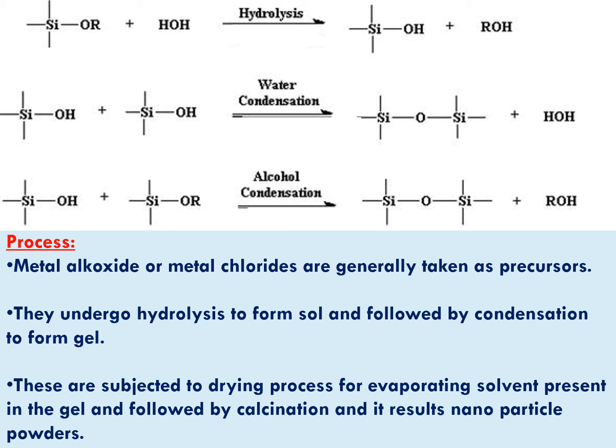Now, this silica hydroxide undergoes a polycondensation reaction and forms a three-dimensional network. This network is subjected to aging for a long time, becoming densified. After aging, the excess solvent and water molecules are removed. Then it is subjected to drying, where external water molecules are evaporated. Finally, it is subjected to calcination at high temperature, and you get the final silica nanoparticle material.